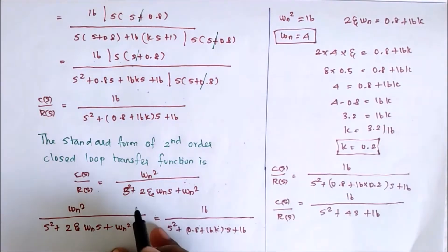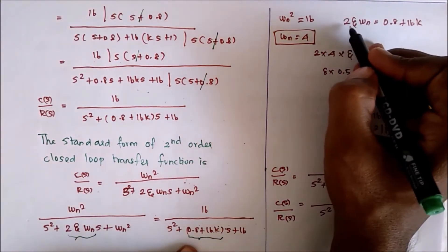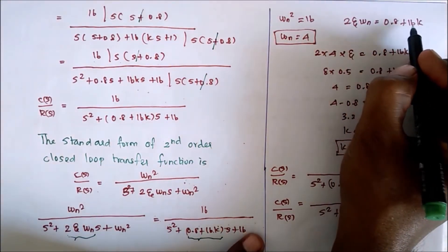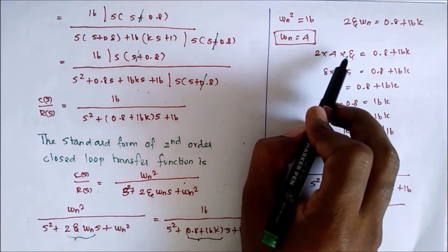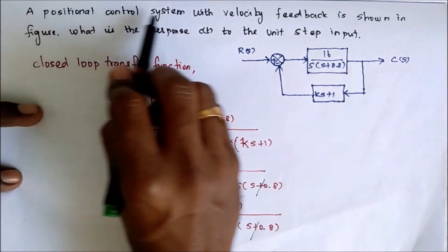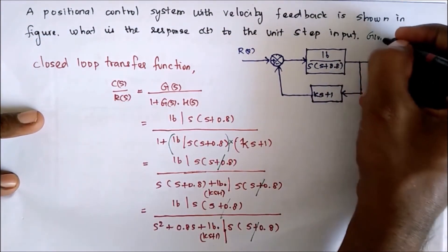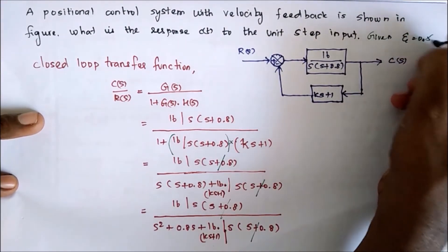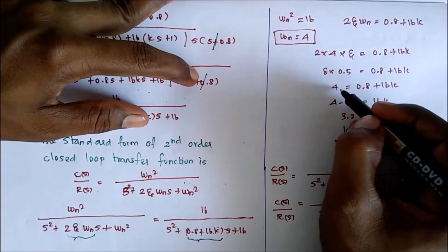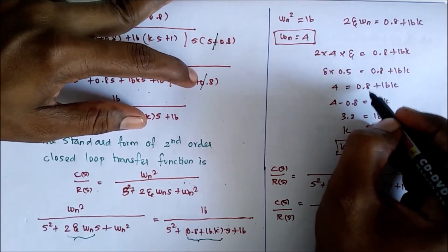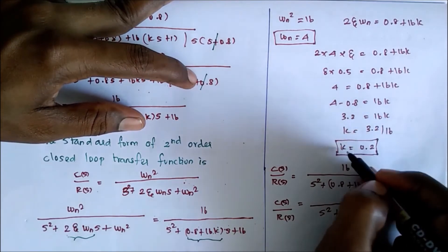We see here 2ζωn equals 0.8 plus 16K. From the given problem, the damping ratio ζ equals 0.5. Now we substitute ζ equals 0.5: 2 times 0.5 times 4 equals 4 on the left-hand side. On the right-hand side, we bring 0.8 to the left, giving 3.2. So K equals 3.2 divided by 16, therefore K equals 0.2.